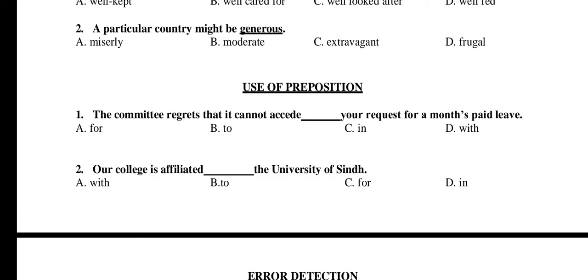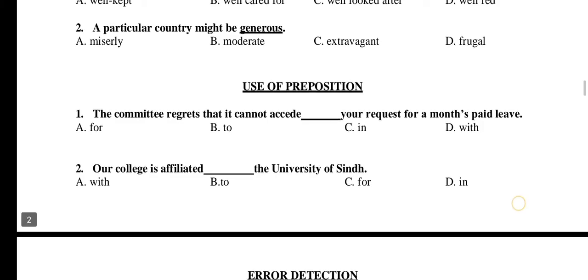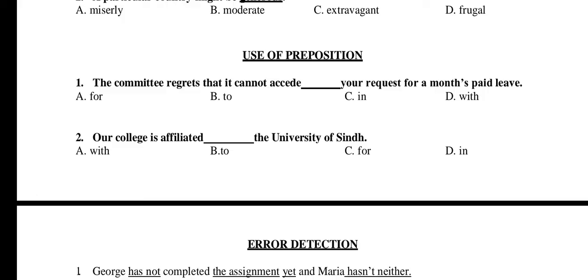Use of Prepositions. Question 1: The committee regrets that it cannot accede ___ your request for a month's paid leave. A) for, B) to, C) in, D) with. The right option is B: to. Question 2: Our college is affiliated ___ the University of Sindh. A) with, B) to, C) for, D) in. The right option is B: to.